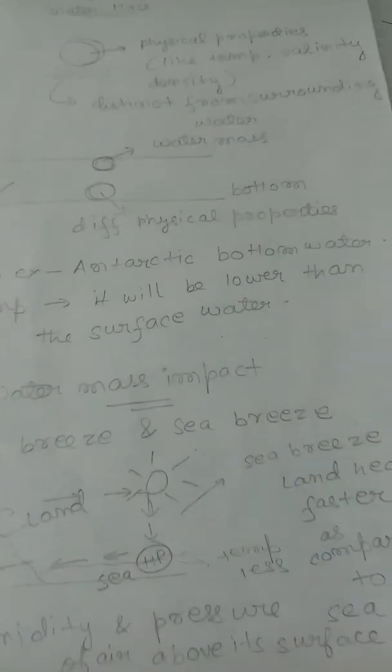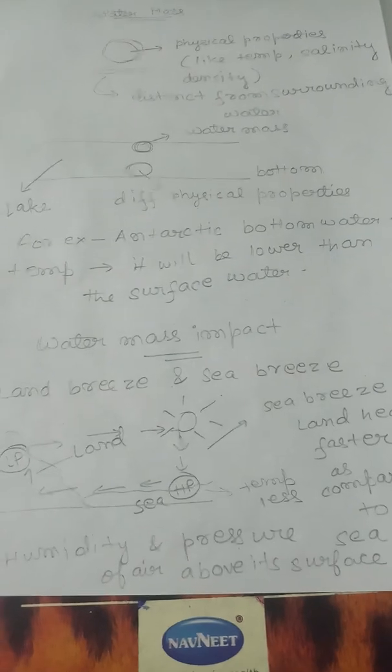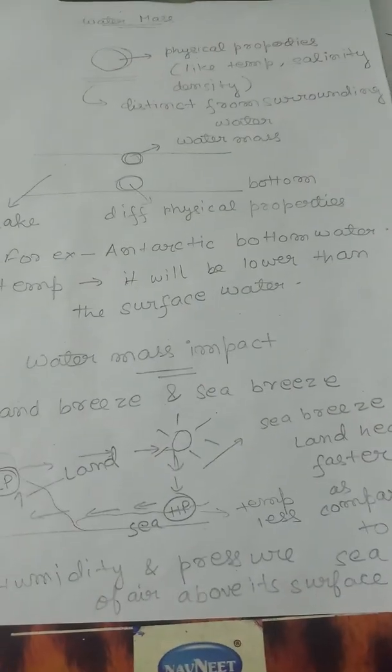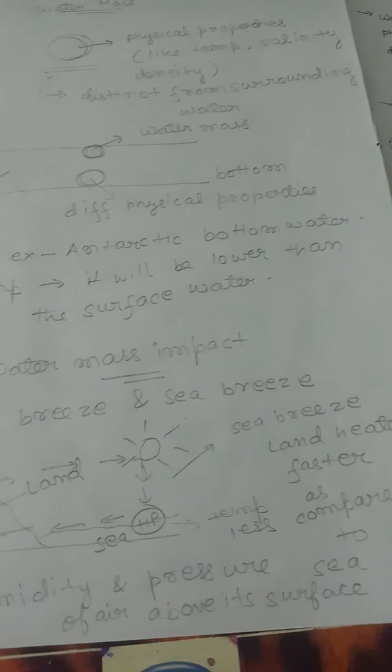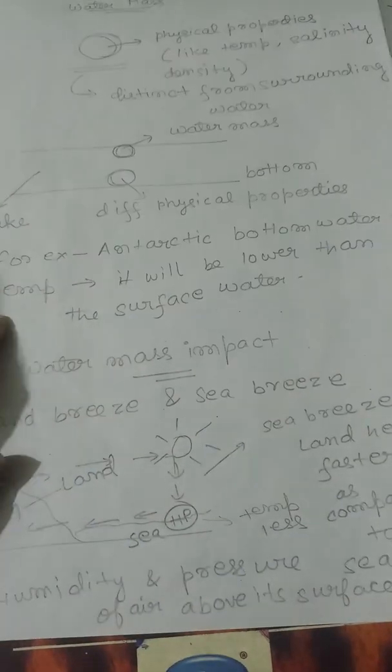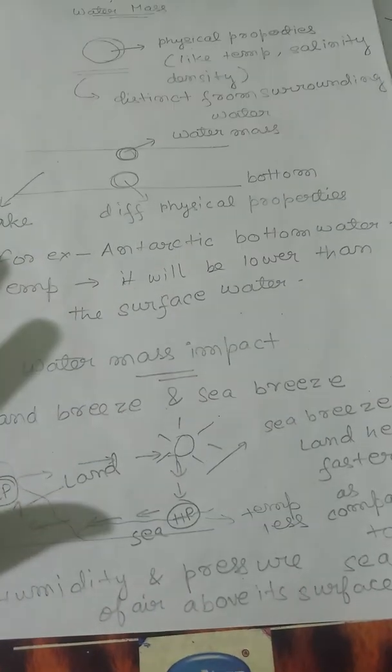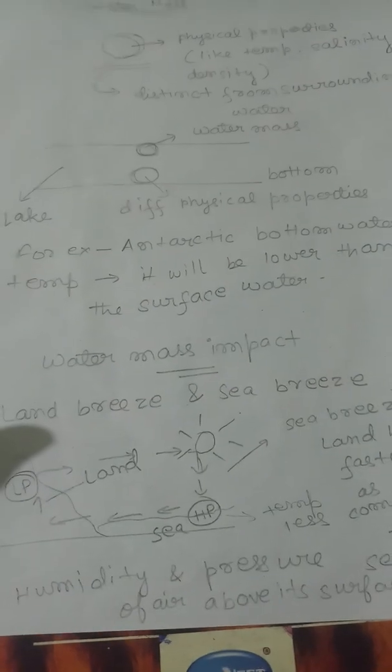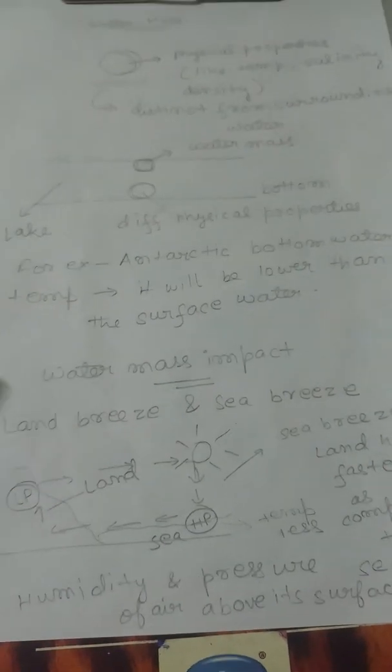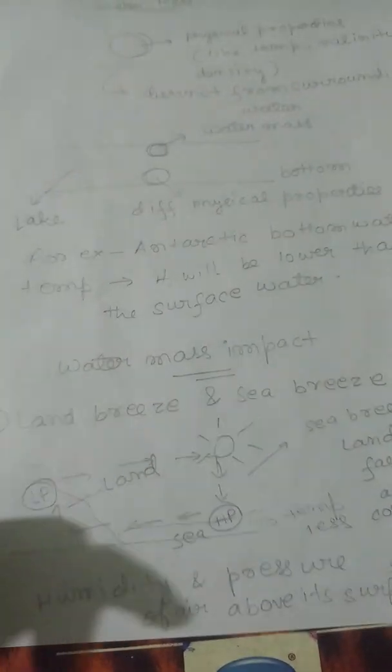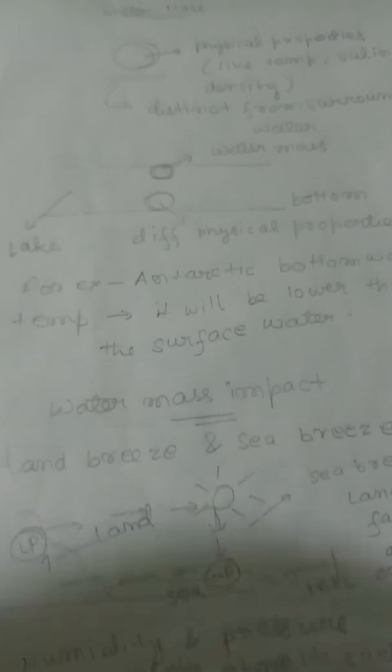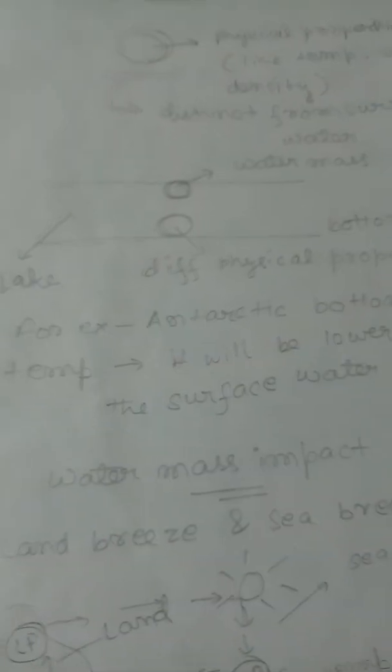For example, Antarctic bottom water. At the bottom it will have lower temperature, obviously, than the surface water. This way all the properties vary which we have at the surface level or at the bottom level.